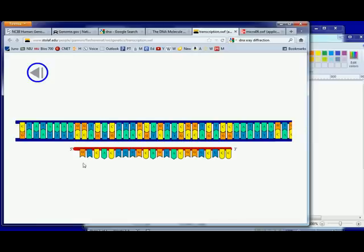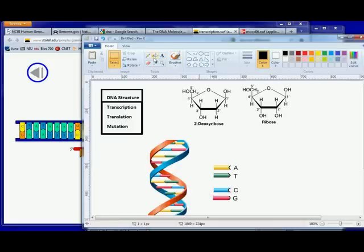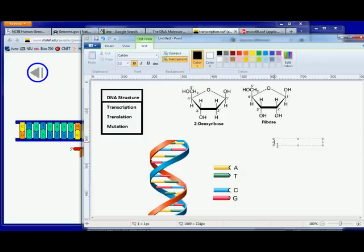There are three types of RNA. mRNA, you can just put a little m RNA. The m stands for messenger. The other type of RNA is rRNA, and the r stands for ribosomal, meaning the ribosome.